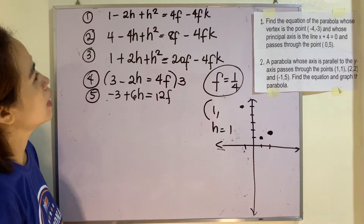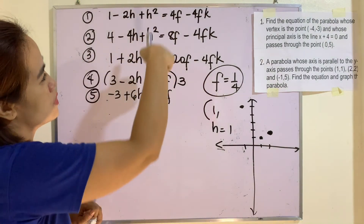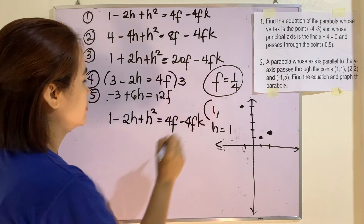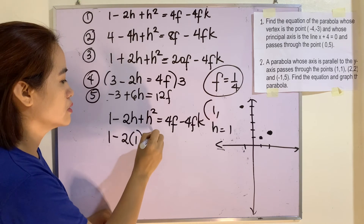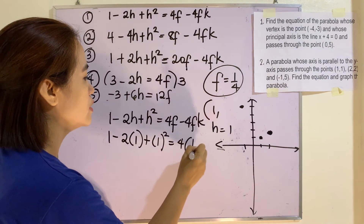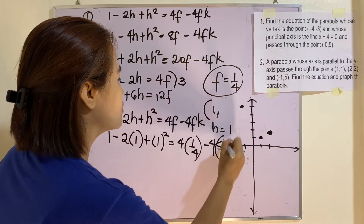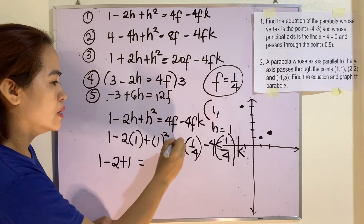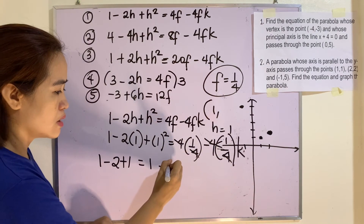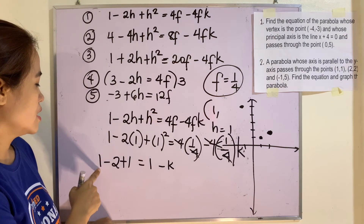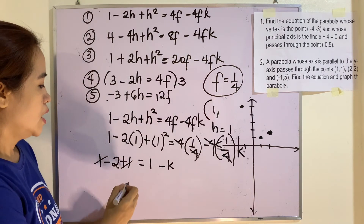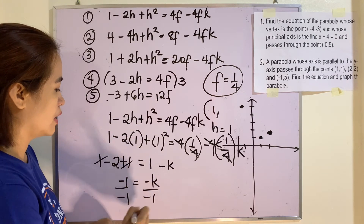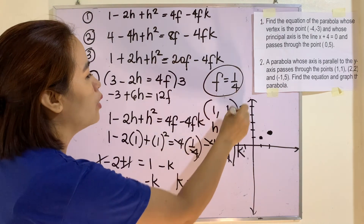Now we solve for k using Equation 1. Substituting h = 1 and f = 1/4: 1 - 2(1) + 1² = 4(1/4) - 4(1/4)k, which gives 0 = 1 - k. Transposing: -1 = -k, so k = 1. The vertex of the parabola is (1, 1).